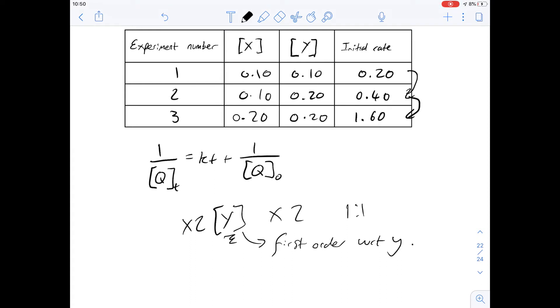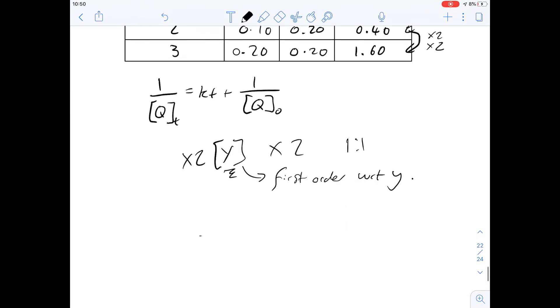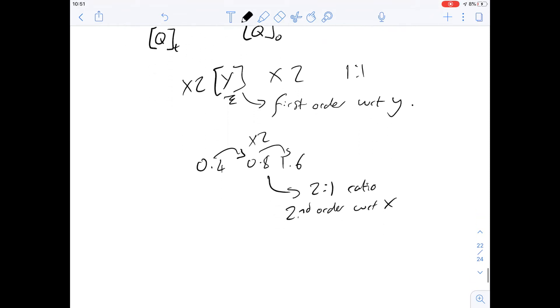And what about X? So as we move from experiment two to three, Y stays the same, but X doubles, and this doubles twice. So it's gone from 0.4, and it's doubled to 0.8, and doubled again to 1.6. And if it's doubled twice, that means it's going to be a two to one ratio. And we can say that it's going to be second order with respect to X.